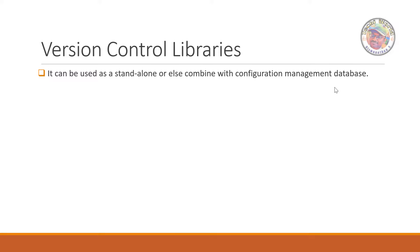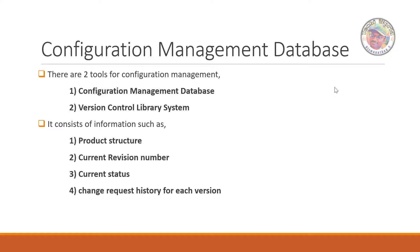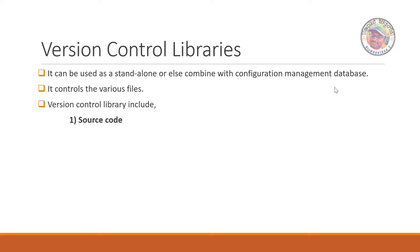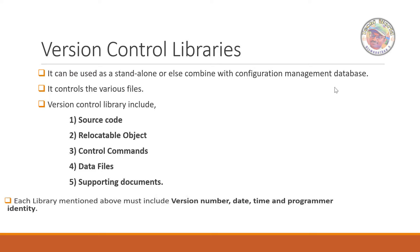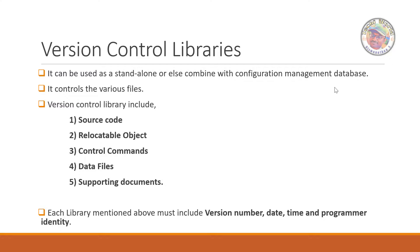Next are version control libraries — this is a standalone application and a new tool. You can use a configuration management database with version control. We can control various files. If you want to look at the products, you can use outer information and functionality. When you use source code, you can use supporting documents — if you use an algorithm, you will have a description in document form, so you address supporting document control.